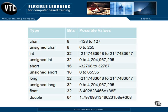An unsigned character, of course, cannot be negative. It still takes eight bits of storage, and it goes from zero to 255, all eight bits set on.